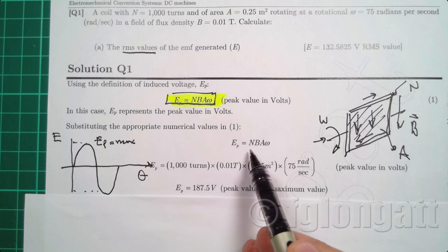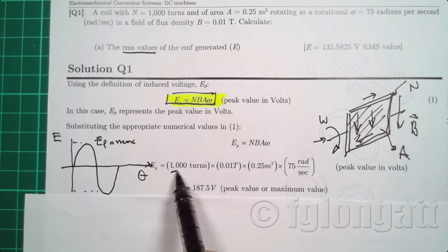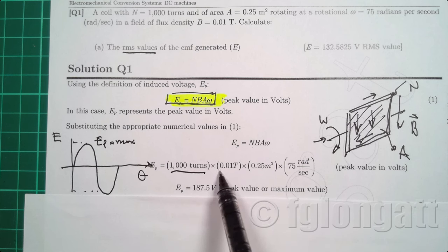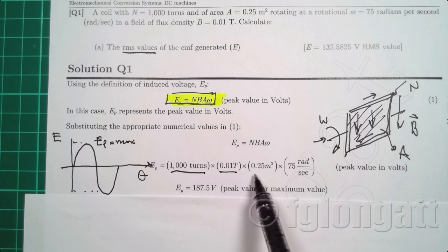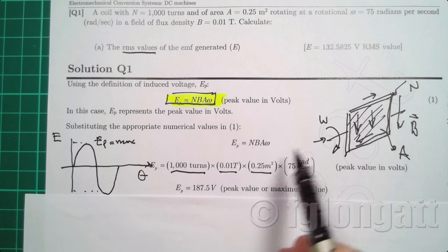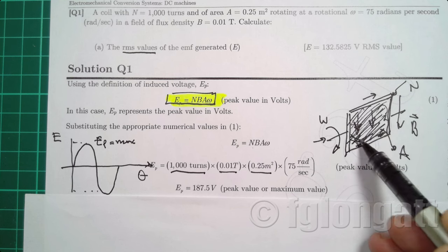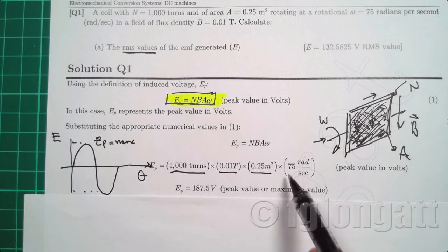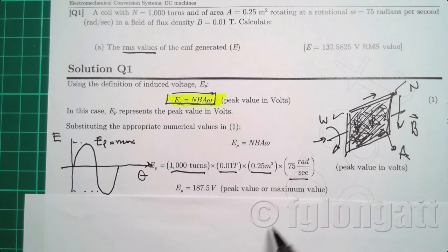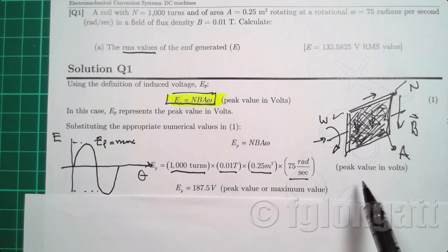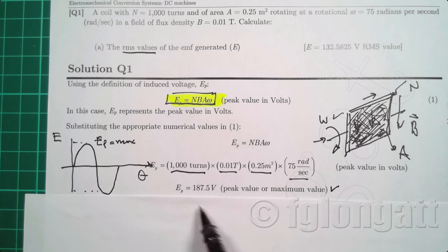So it's a numerical substitution. We have here 1000 turns, that is N. We have B, the magnetic flux density. We have A, the cross section area here in this coil. And we have the rotational speed 75 radians per second. So when we put the numbers together, the induced voltage is 187.5 volts.